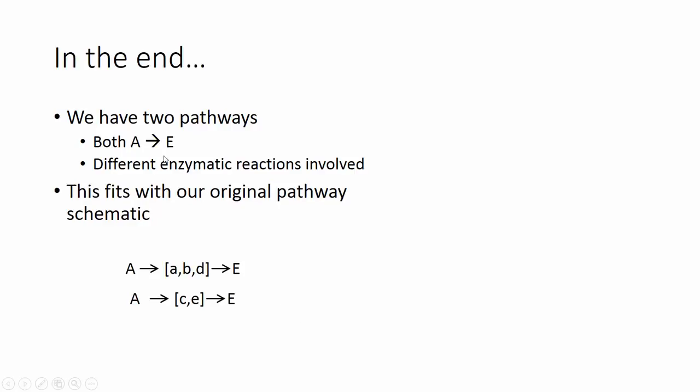In the end, we have two pathways, both A to E. Different enzymatic reactions are involved. And this fits with our original pathway schematic. We have two different pathways. In this case, we know there are two branch pathways. But we have A making E in both cases. This ABD reaction and this CE reaction.